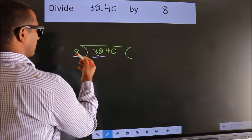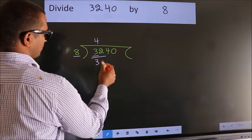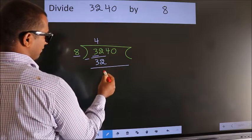When do we get 32 in the 8 table? 8 fours are 32. Now we should subtract, we get 0.